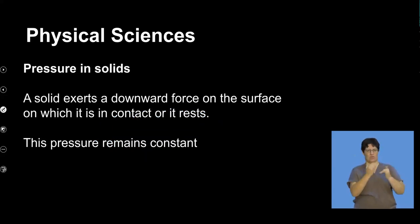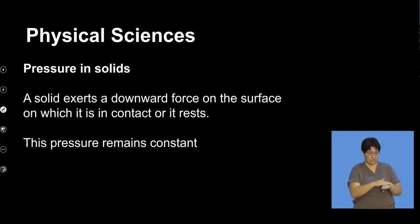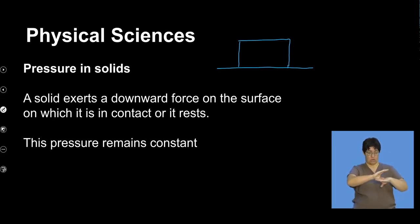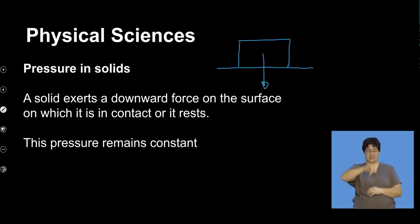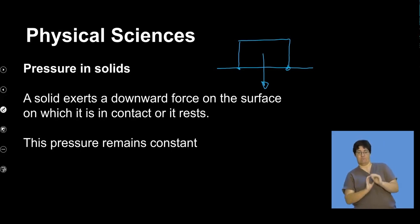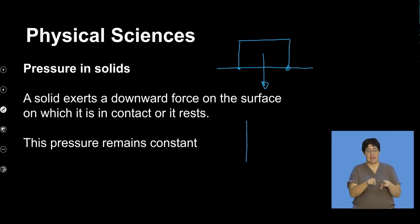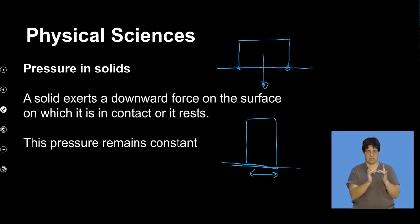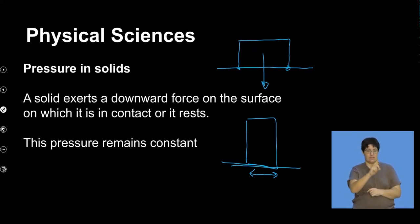In solids, a solid exerts a downward force on the surface on which it rests. If we have a block, the pressure of this block is the force it exerts, which can be due to the gravitational force pulling it downwards. The greater the surface area of contact on which the block rests, the lesser the pressure. If the same block is placed vertically so that the contact surface area is smaller, this corresponds to greater pressure. This pressure remains constant in solids.